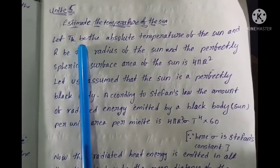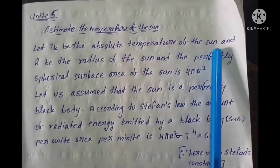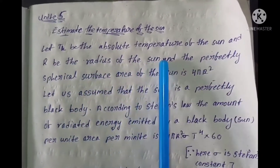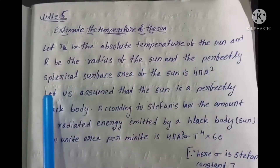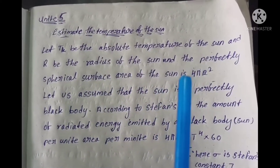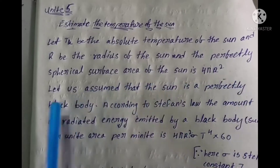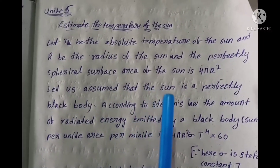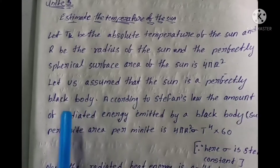Let K be the absolute temperature of the sun and R be the radius of the sun. The perfectly spherical surface area of the sun is 4πR². Let us assume that the sun is a perfectly black body.